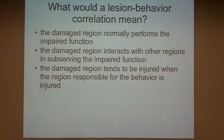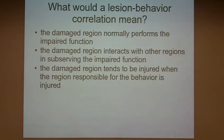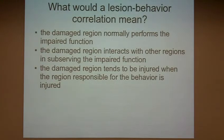There are lots of issues in terms of how to interpret correlations between the location or severity of damage and behavior, even if you're lucky enough to find something reliable. The most obvious interpretation is that the damaged region normally performs the impaired function. Another possibility is that the damaged region interacts with other regions serving that function, or perhaps it's not specifically related to the impaired function but contributes information that's helpful for performing it — so maybe the function goes on somewhere else in the brain but requires some kind of input that the damaged region provides.